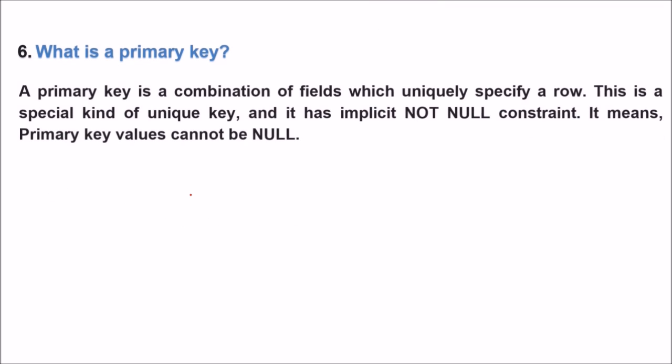What is a primary key? In a table, if you are trying to find a particular record — a tuple, meaning a single row — some column that can uniquely identify that row is called the primary key. So a primary key is a combination of fields which uniquely specifies a row. It is a special kind of unique key and has an implicit NOT NULL constraint, meaning primary key values cannot be null.